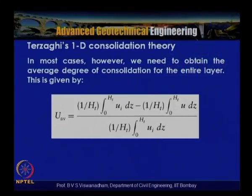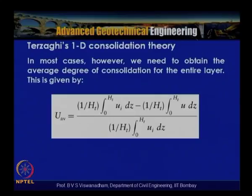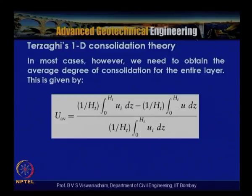In most cases we need the average degree of consolidation for the entire clay layer. The average degree of consolidation Uav is defined as: Uav = [∫₀ʰᵗ ui dz − ∫₀ʰᵗ u dz] / ∫₀ʰᵗ ui dz, where ht is the total thickness of the clay layer.